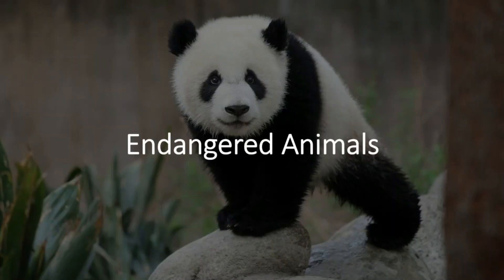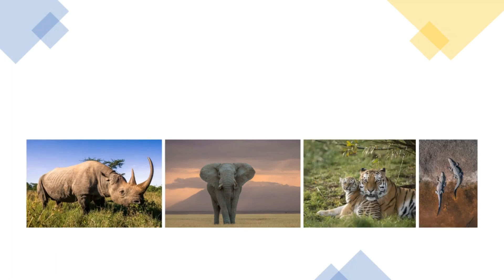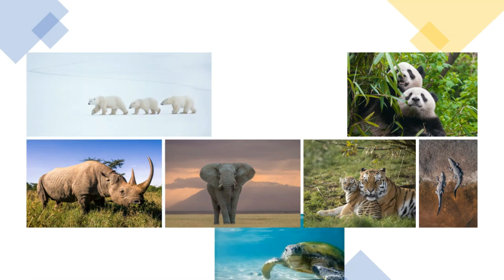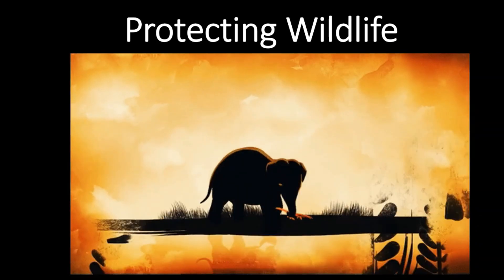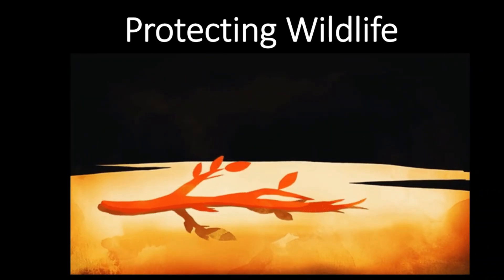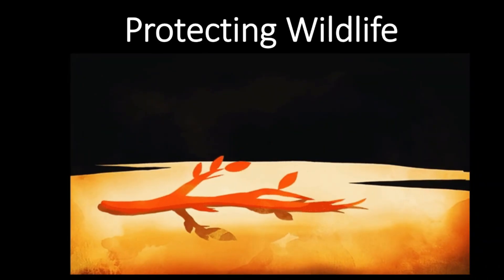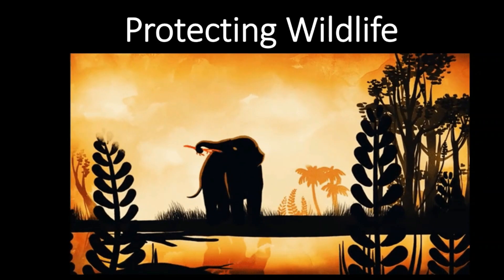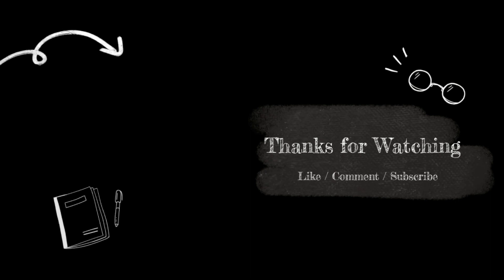Some animals are disappearing fast from the earth because people are destroying their habitats or hunting them for selling their body parts. Such animals are called endangered animals. Some endangered animals are elephants, rhinoceros, tigers, crocodiles, pandas, polar bears and sea turtles. Endangered animals can disappear forever if they are not protected in their habitats. To save these animals, the government of India has made laws to control the killing and selling of their body parts. The government of India has also set up national parks and wildlife sanctuaries to protect these animals.